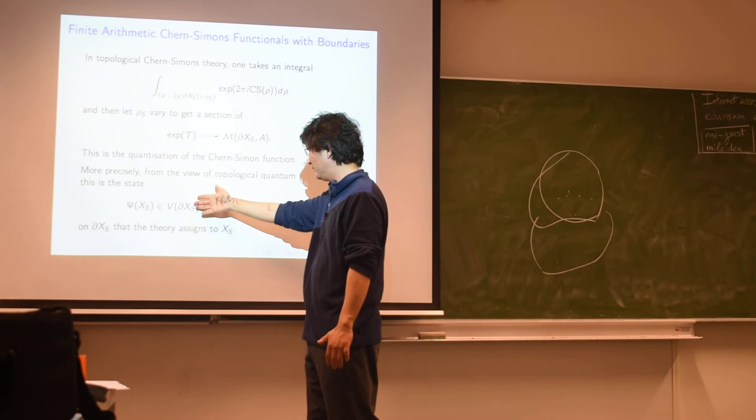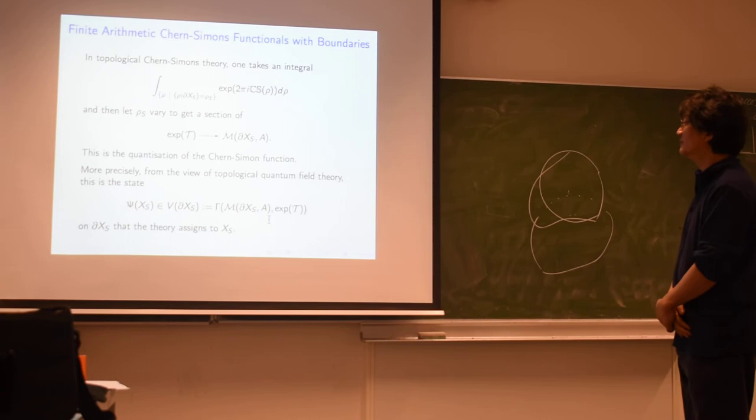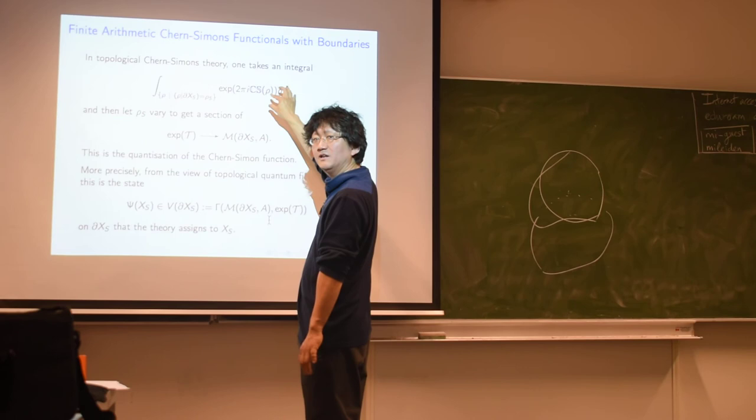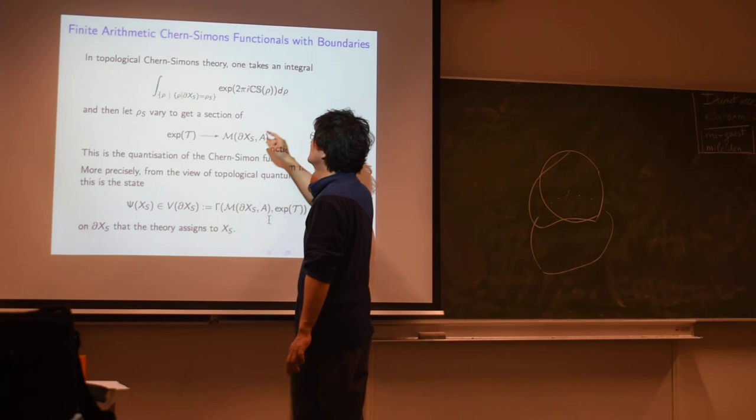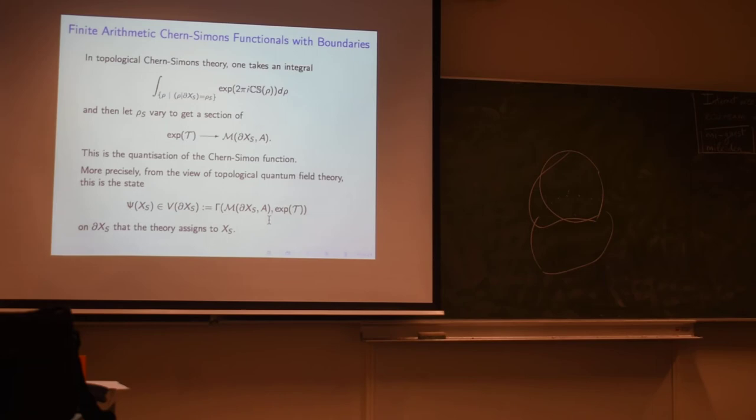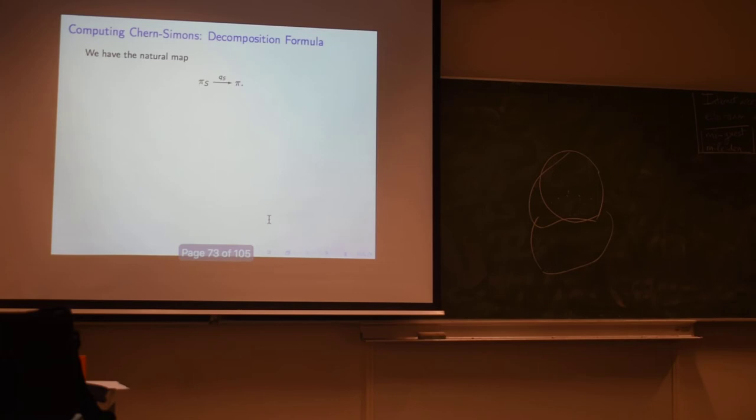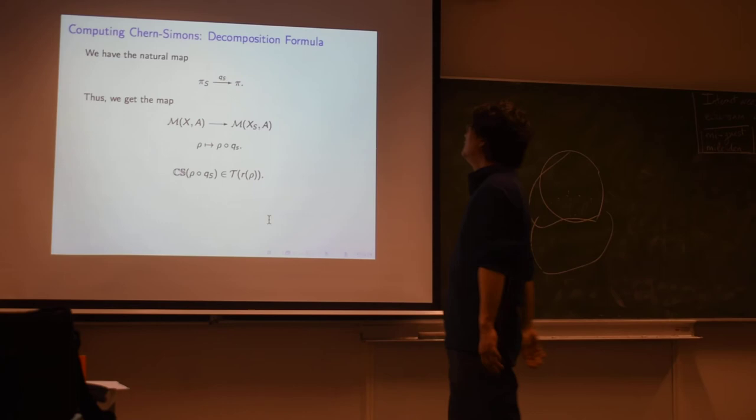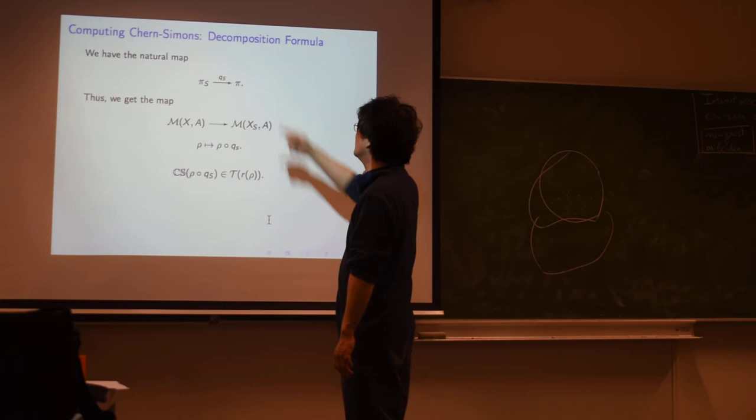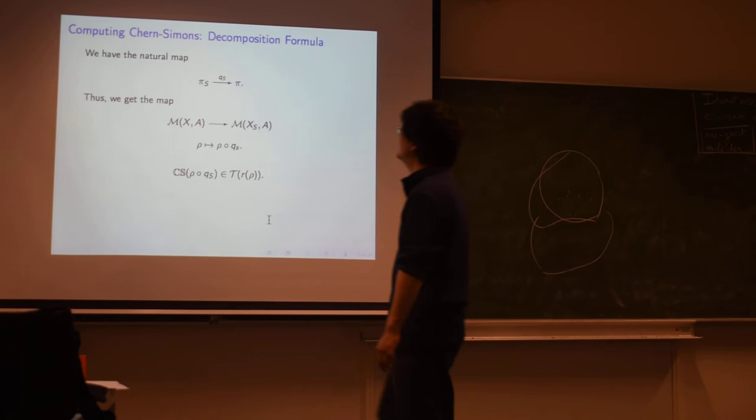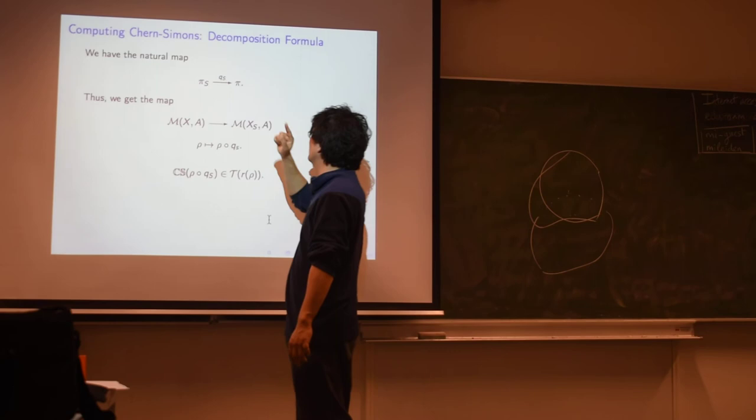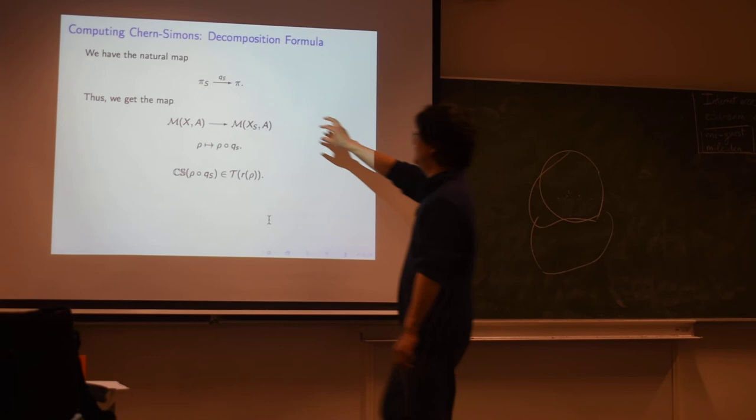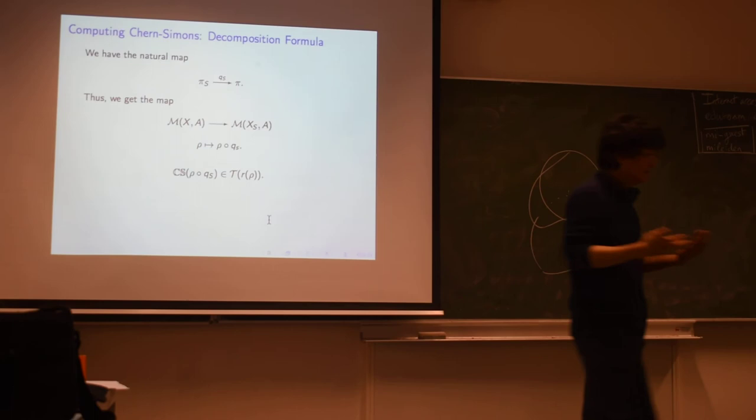Let me remark briefly, in topological trans-Chern-Simons theory, what does one do? One takes this kind of trans-Chern-Simons lines, elements inside trans-Chern-Simons lines, then runs through an integral over all the ρs that restrict to a specific boundary representation. That way you get a quantity that only depends on the boundary representation. And then, as ρ varies, you get a section of the torsor over the boundary moduli space, by integrating over all global representations that restrict to the same thing, one for every ρₛ, and then you let the ρ vary. This is the so-called quantization of this situation, or from the point of view of topological quantum field theory. This is the state inside the boundary vector space that the theory assigns to the three-manifold Xₛ. One can study analogs of this over number fields as well. I haven't done it yet, except for the trivial boundary case. But I think an interesting question is what kind of ρs one should be integrating over here.